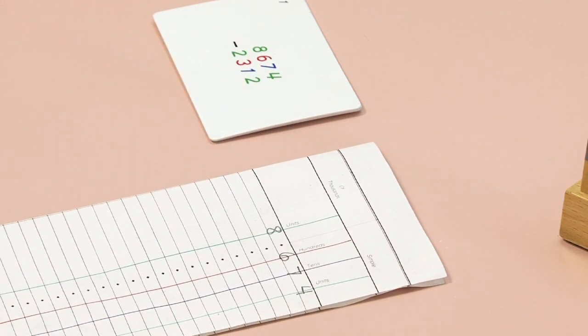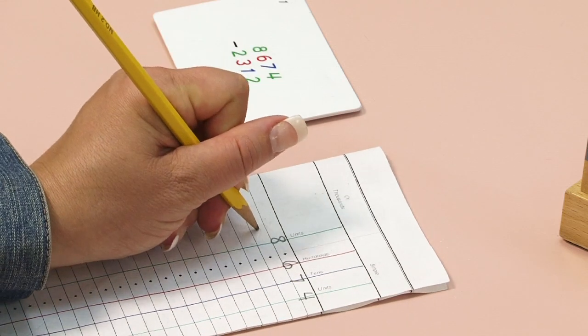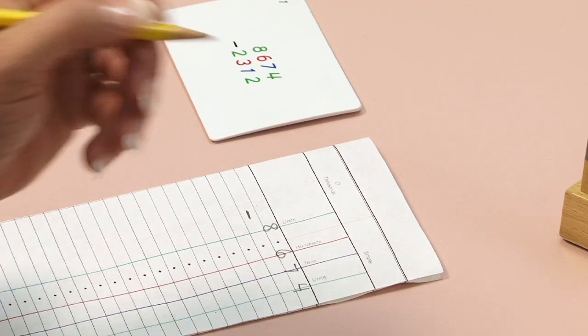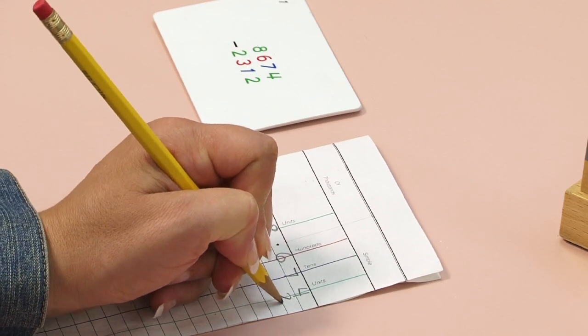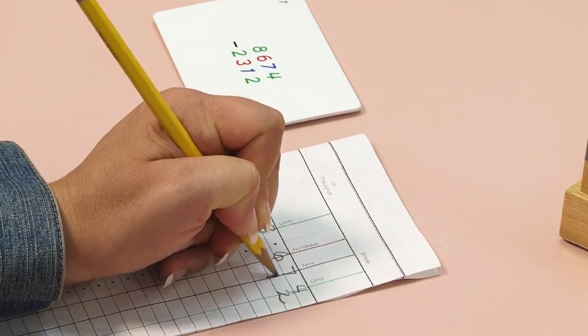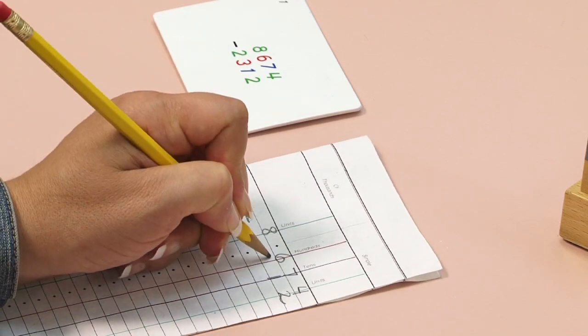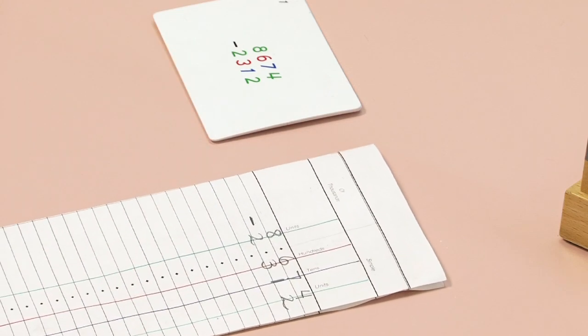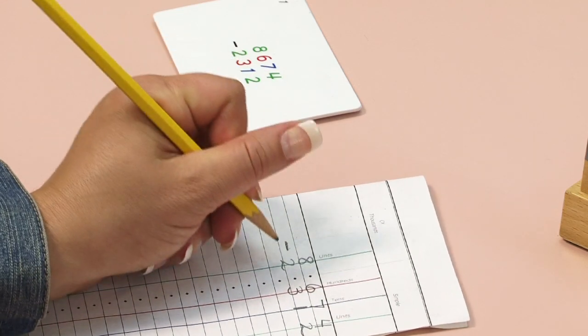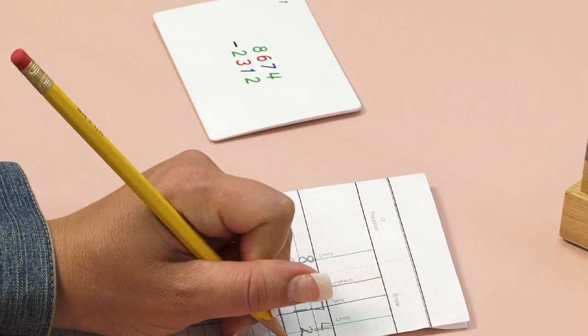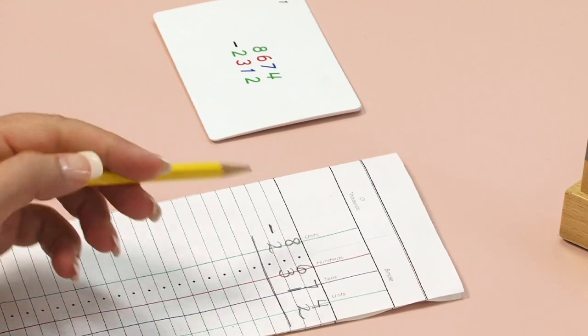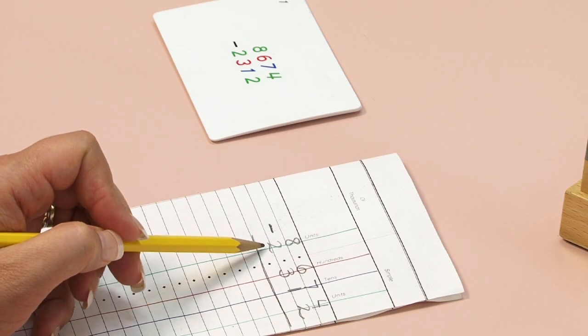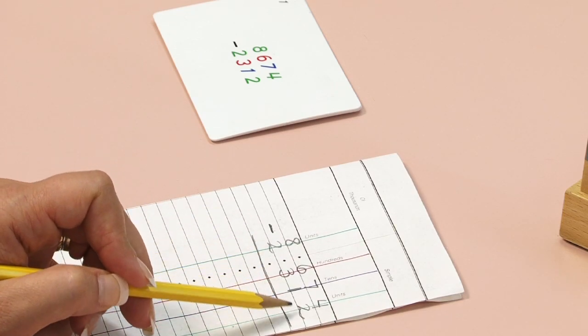I'm not going to add today, I'm going to subtract. That means to take away. Take away two units, one ten, three hundreds, and two thousands. I'll draw my line. That's 8,674 take away 2,312.